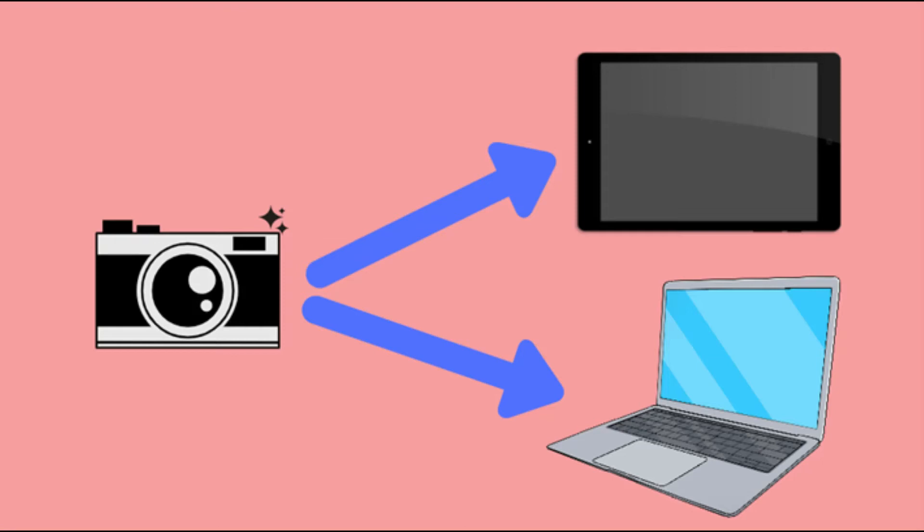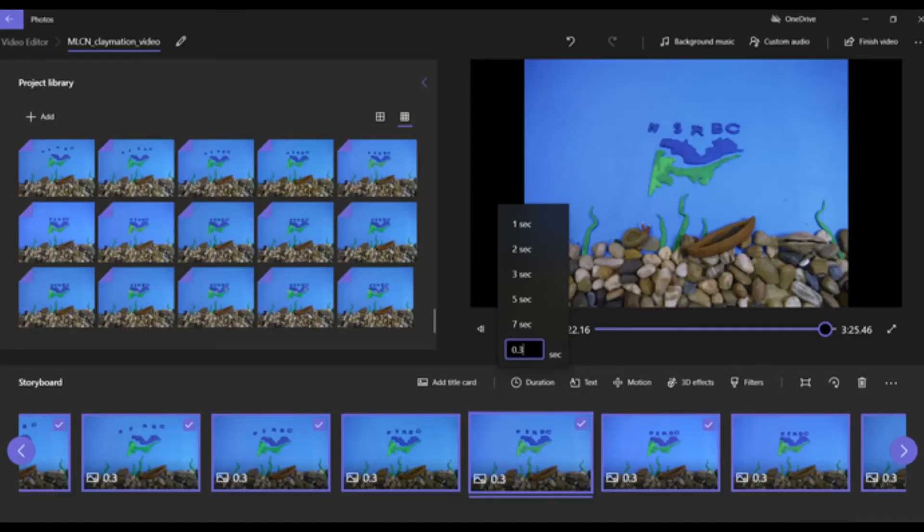Once you upload the photos into the software, you can arrange them and edit them as needed. You may have to change the brightness on a few photos so that they match your others, as lighting can change throughout the filming process.